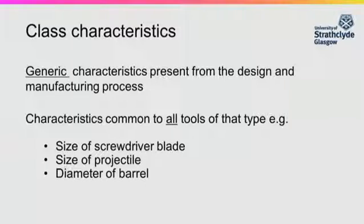In the examination process, the scientist is comparing class and individual characteristics. Class characteristics are derived from the manufacture of the tool or firearm cartridge. These relate to the design and quality control levels of the manufacturer. The size of the projectile in a cartridge would be consistent in ammunition production, and a gun manufacturer would want to ensure that the diameter of the barrel was also consistent in every gun of that type that they produce.